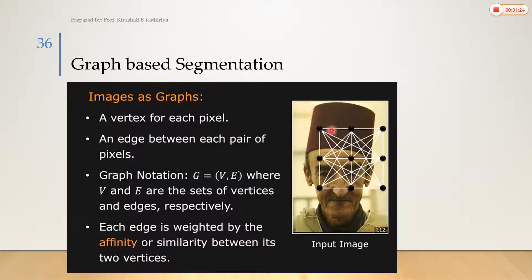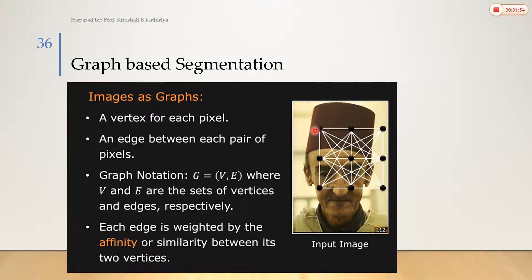So vertex represents each pixel, and the edge connects each pair of pixels — those which we combine, merge, or connect. The graph notation is G = (V, E), where V is the set of vertices and E is the set of edges. Each edge is weighted by the affinity or similarity between its two vertices, meaning one pixel connected to another pixel through an edge.